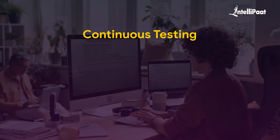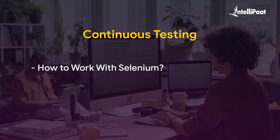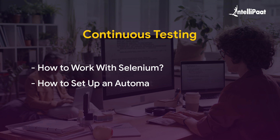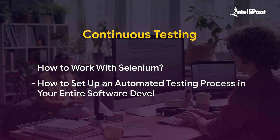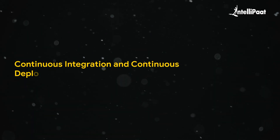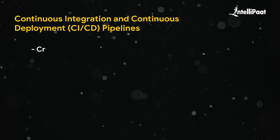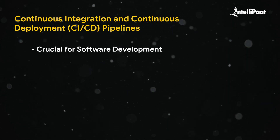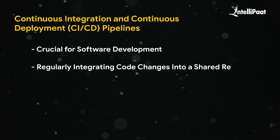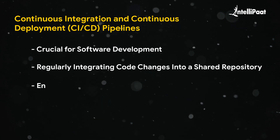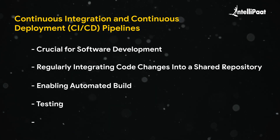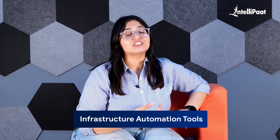Once done with that, the next topic should be continuous testing. Here, you will learn how to work with Selenium, and this will help you set up an automatic testing process in your entire software development lifecycle. The course should then dive into continuous integration and continuous deployment pipelines, which are crucial for software development. The CI/CD pipeline involves regularly integrating code changes into shared repositories, enabling automatic build, testing, and deployment processes. Additionally, you will also explore infrastructure automation tools such as Jenkins.